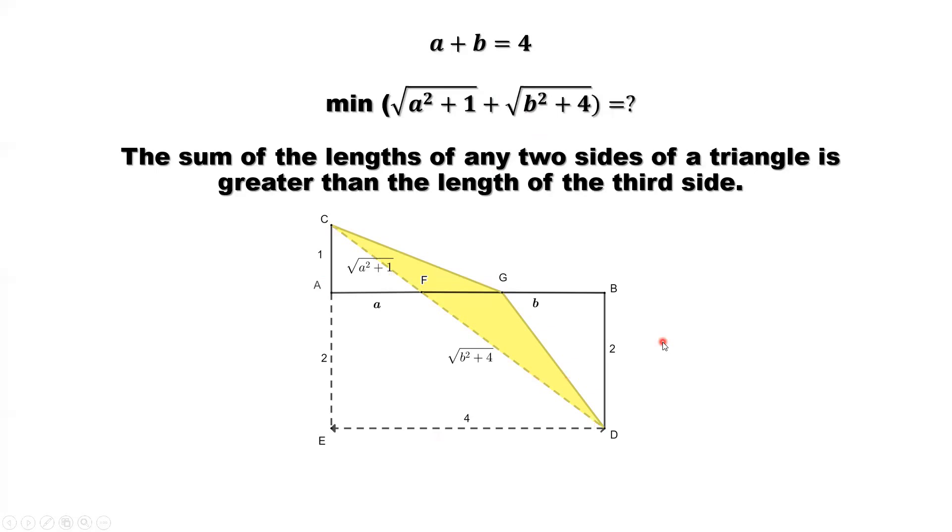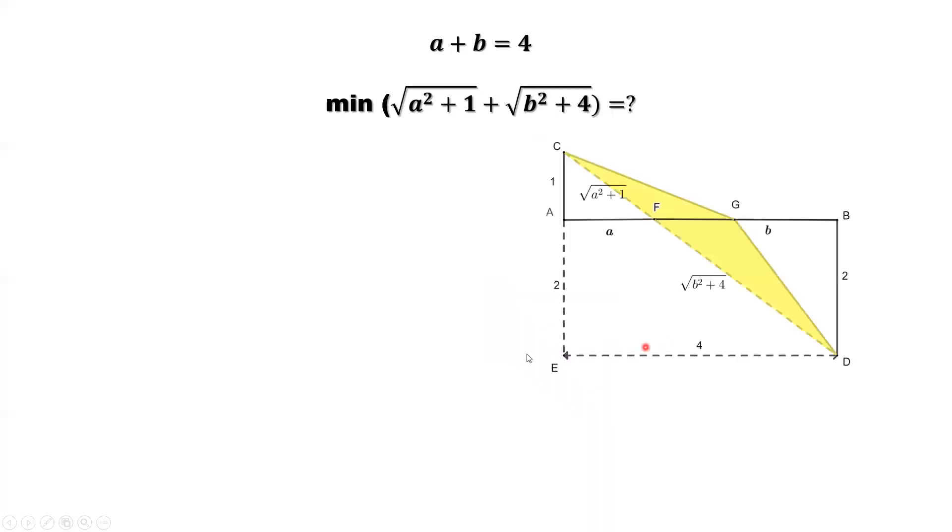How to find? E d is given, that's 4, a plus b. c, e, this side is 1, this side is 2, so here is 2, 1 plus 2 is 3. What is the hypotenuse?